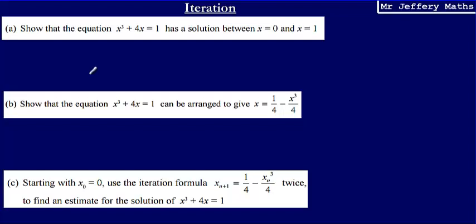Welcome to a video taking a look at iteration. We're going to go through two exam questions on iteration, starting with this one. We're asked to show that the equation x cubed plus 4x equals 1 has a solution between x equals 0 and x equals 1.